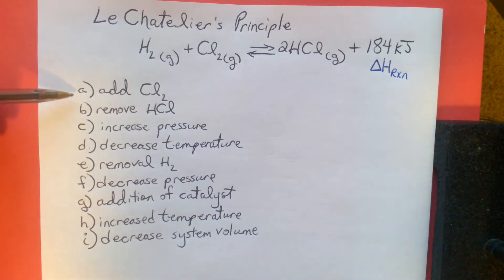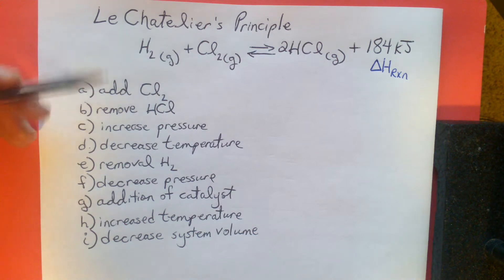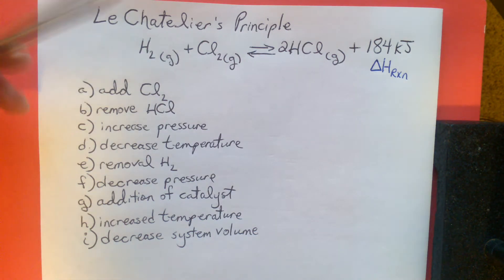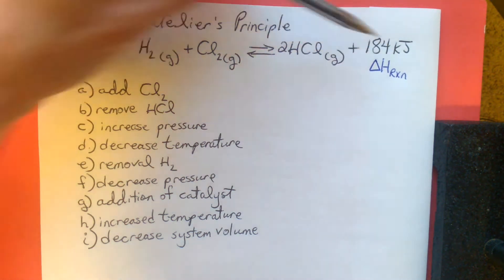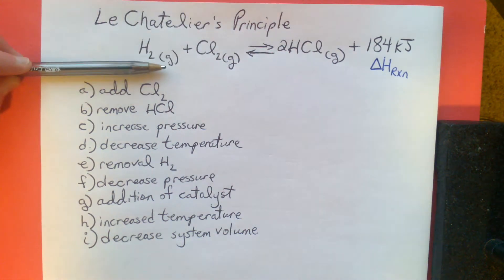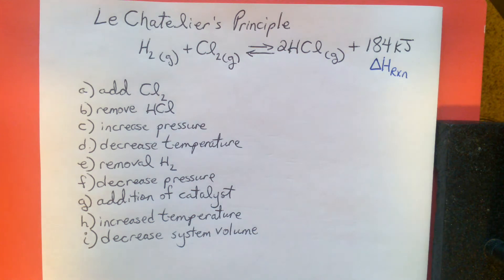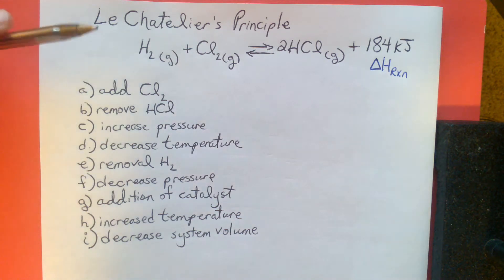These are all going to be examples showing how stressors affect this equilibrium. Will it shift forward to the product side — more HCl? Will it shift to the left, to the reactant side where hydrogen and chlorine gases are? Or will the stressor cause no shift at all, neither favoring the forward nor the reverse reaction?